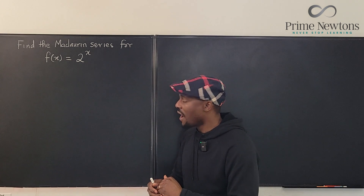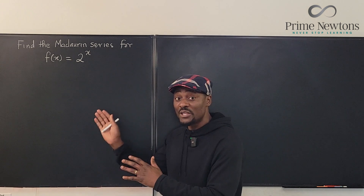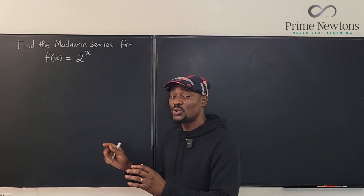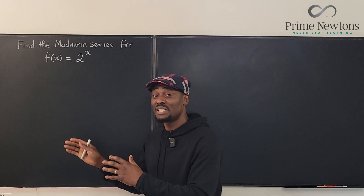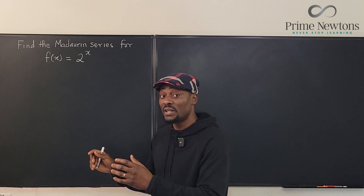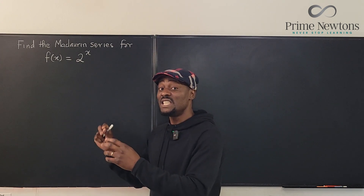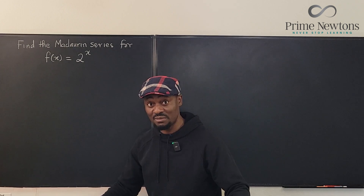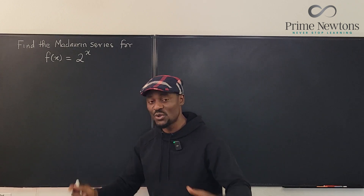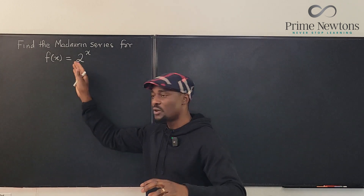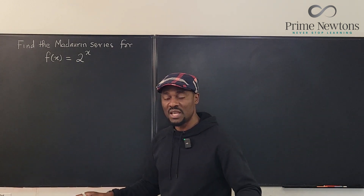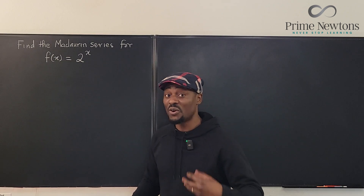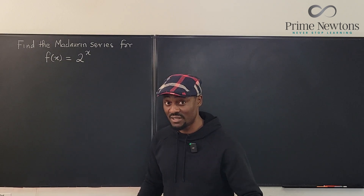Now there are two ways to answer this problem. It is either you use the shortcut method that depends on your knowledge of e to the x, which is the father of all the exponential functions, or you just do the work raw from the beginning by taking derivatives using the definition of the Taylor series.